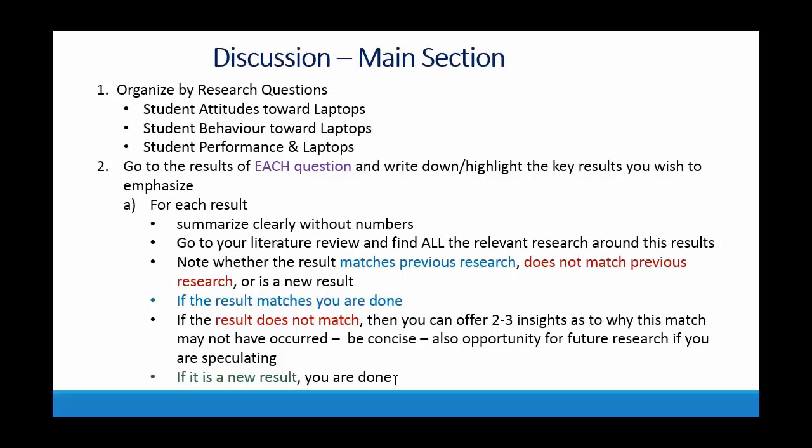That's how you approach and write a discussion. To review: you're organizing by research questions. For each research question, you find the key results in your results section and summarize them — either on paper or on screen alongside your discussion. Then you match those results to the previous literature in your literature review to find what's relevant. Finally, you report whether each result matches, doesn't match, or is a new result. That's how you complete this main discussion.